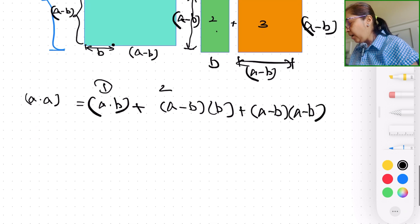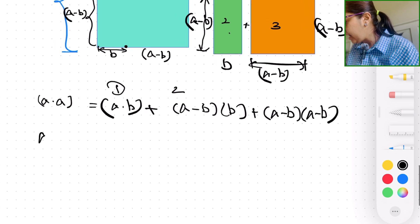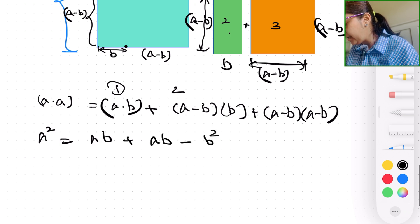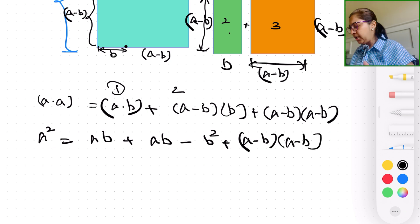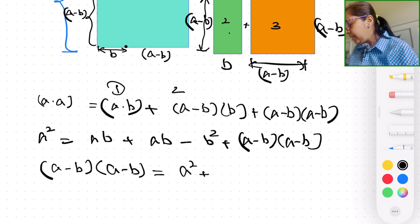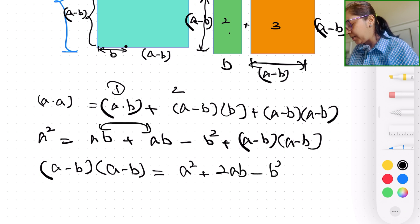Okay? So now if you expand it, we get a squared equal to ab plus ab minus b squared. And I'm going to leave (a-b) times (a-b) as is. And if we rearrange the equation, we get (a-b) times (a-b) equal to a squared plus we add these two like terms to 2ab minus b squared.